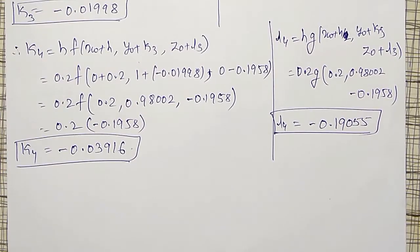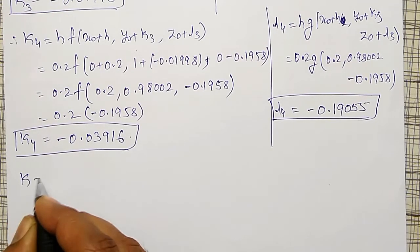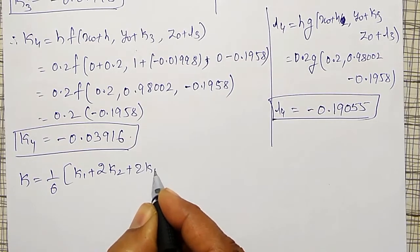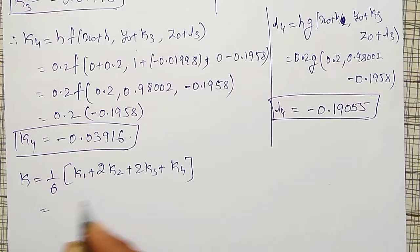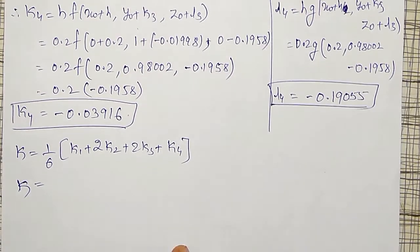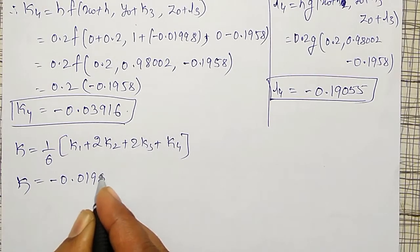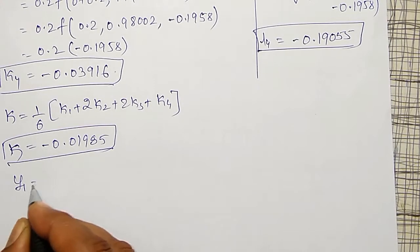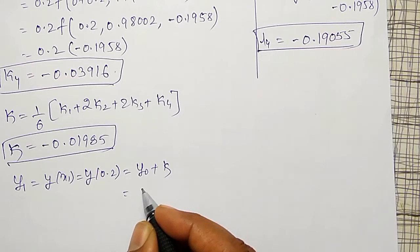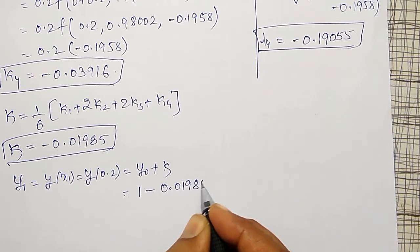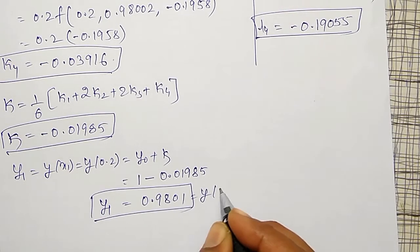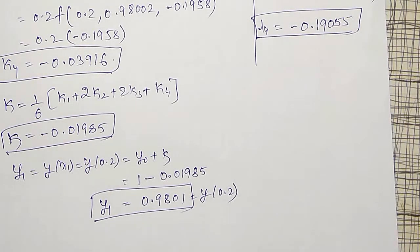Using all values k1, k2, k3, k4, l1, l2, l3, l4, I calculate k = (1/6)(k1 + 2k2 + 2k3 + k4). Operating in the calculator, k = −0.01985. Therefore, y1 = y(0.2) = y₀ + k = 1 + (−0.01985) = 0.9801. Only the solution for y was asked, not y', so we stop here.